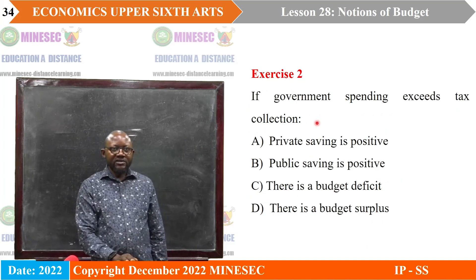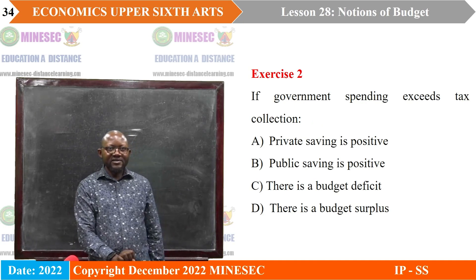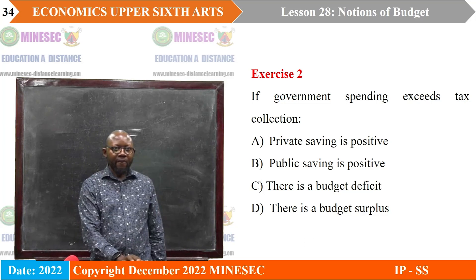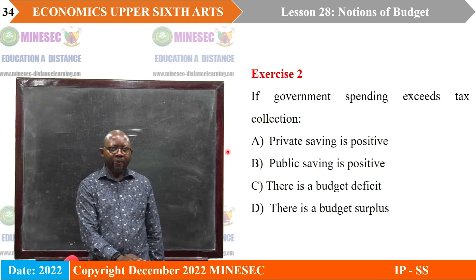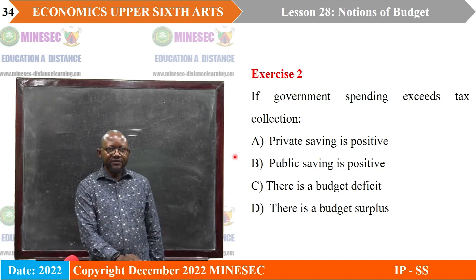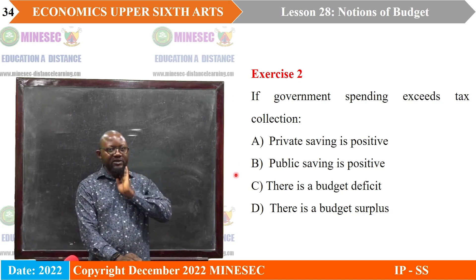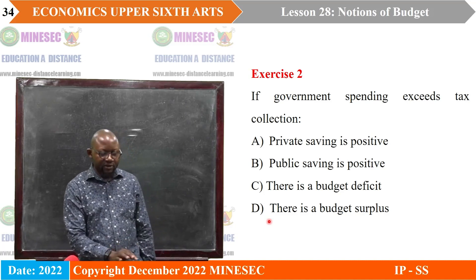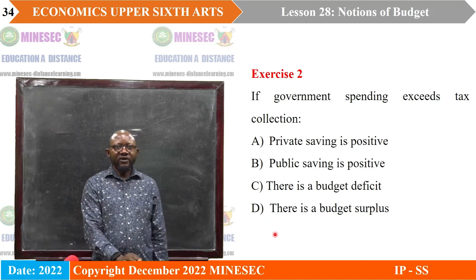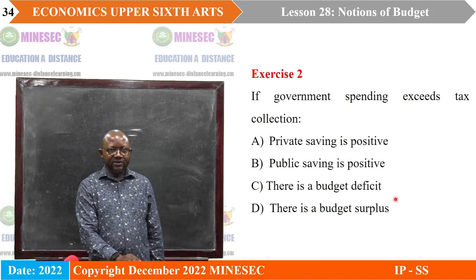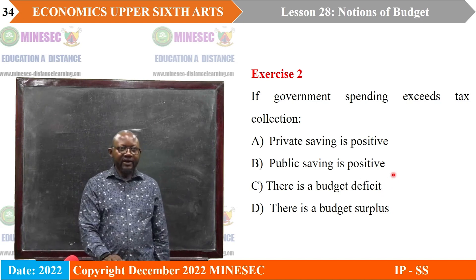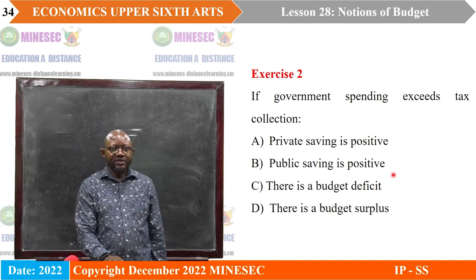Exercise two: if government spending exceeds tax collection, A. private saving is positive, B. public saving is positive, C. there is a budget deficit, D. there is a budget surplus. If G is greater than T, we are talking about a budget deficit, because the reverse — T greater than G — would be a surplus. So the right answer is C, budget deficit.